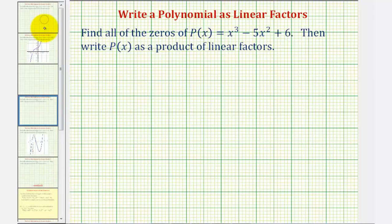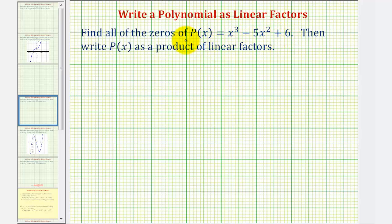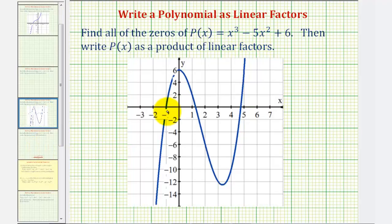Going back to our example, we want to start by finding the real rational zeros of the polynomial function. We could use trial and error using the rational roots theorem, which states that rational roots must come from the ratio of the factors of the constant term to the factors of the leading coefficient. In this case we could list factors of positive six over factors of positive one, but instead we're going to graph the function and see if we can find any real rational zeros as x-intercepts. Notice how there are three x-intercepts, which tells us we have three real zeros, but only one of them, at x equals negative one, looks guaranteed to be real and rational.